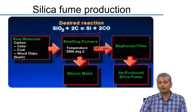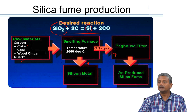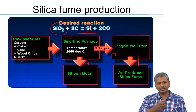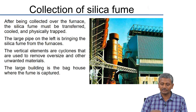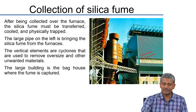Some extremely fine silica flies off with the off-gas and is collected in the baghouse filter — another system for collecting very fine particulate matter, similar to electrostatic precipitators. The baghouse filter is a large building in which fine particulate matter is collected using bags. The silica fume after collection over the furnace is transferred, cooled and trapped physically with the baghouse filter. Large pipes bring the material to the furnaces, vertical cyclones remove oversize and unwanted materials, and this large building is the baghouse where silica fume is captured.